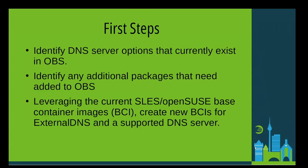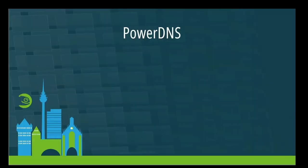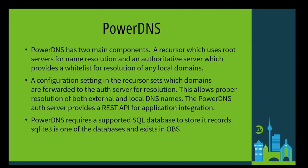The first part of the investigation was to see which self-hosted DNS options are available in OBS. Once that was completed, the next step was trying to create containers for the DNS solution and external DNS. One of the supported external DNS options is PowerDNS. PowerDNS has two separate packages: a recursor that handles name resolution and is pre-configured to use the upstream root name servers, and an authoritative server that provides a whitelist function such that the recursor can forward specific local domains to the authoritative server for resolution.